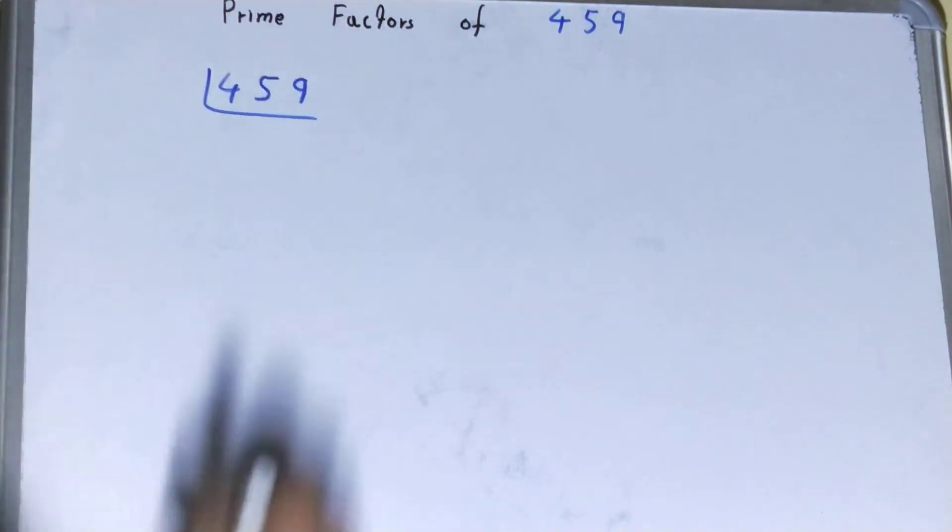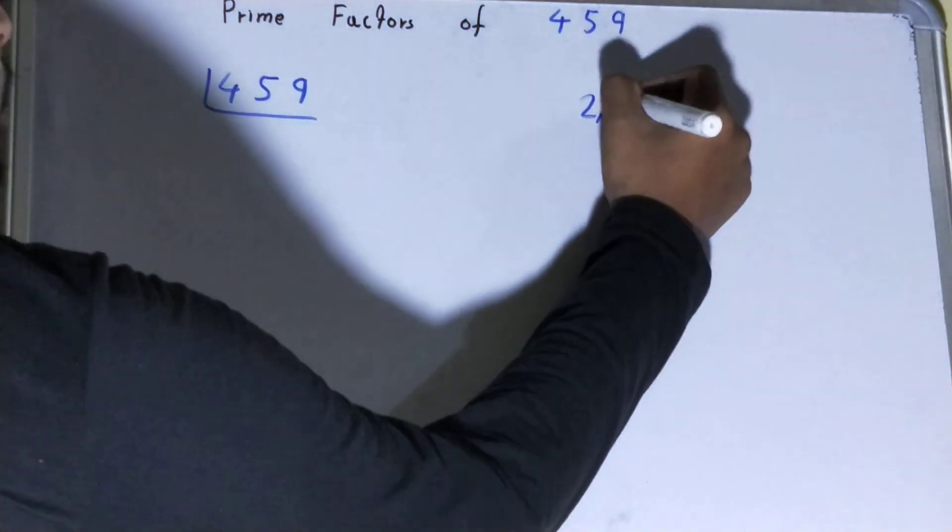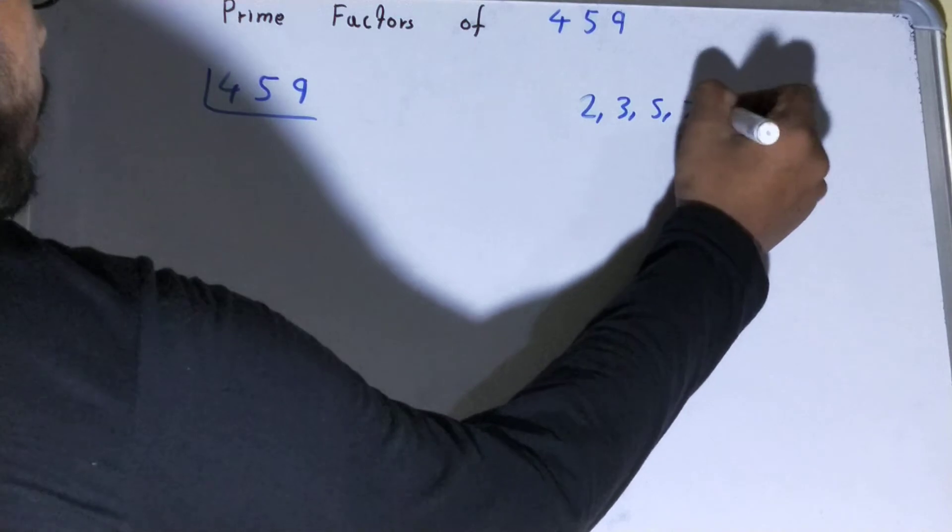And before solving this any further, you must have an idea about what prime numbers are. Prime numbers are numbers that are divisible by one and themselves only, like two, three, five, seven, and so on.